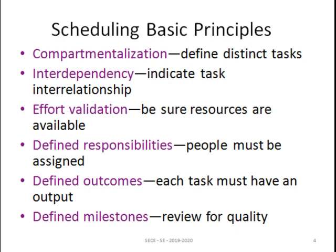If you know the relationship between tasks, your work will be minimized. The third principle is effort validation — it makes sure that resources are available for each and every task. A person or group of persons will be allocated to complete the task. We validate effort by checking whether all the resources are utilized by the resource persons. The next principle is defined responsibilities — the people assigned for the task have some responsibilities.